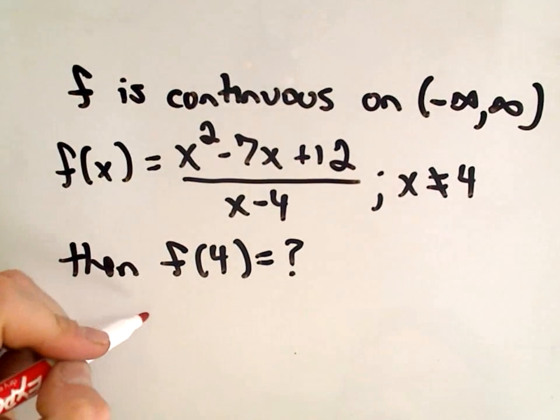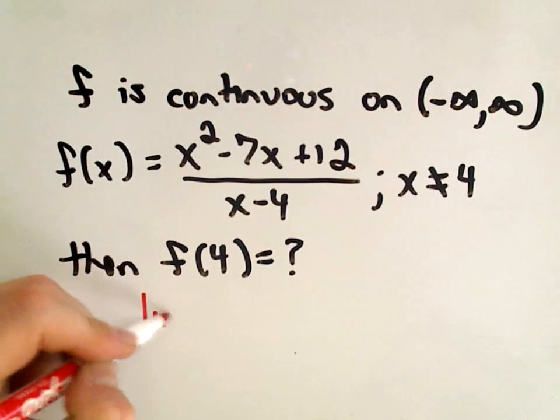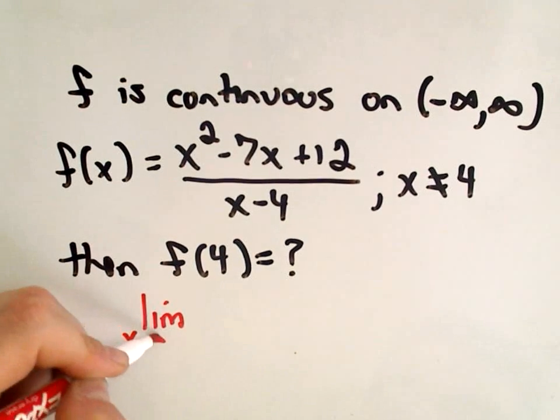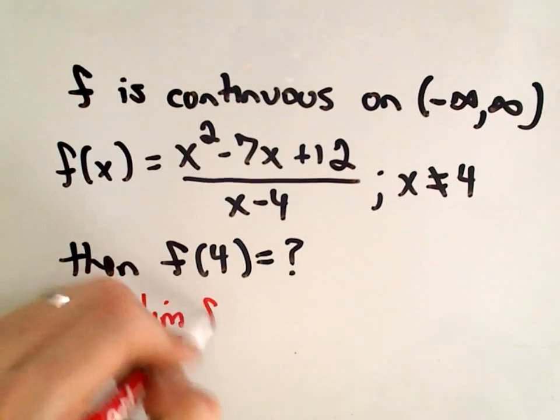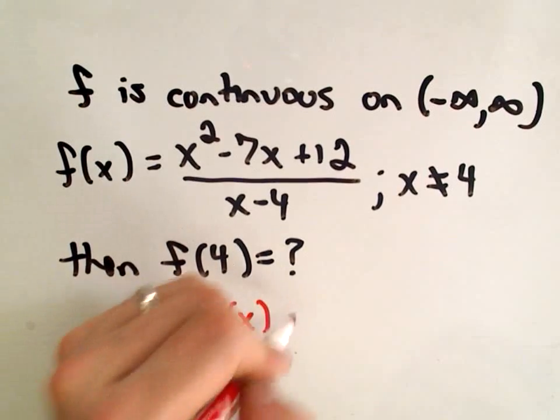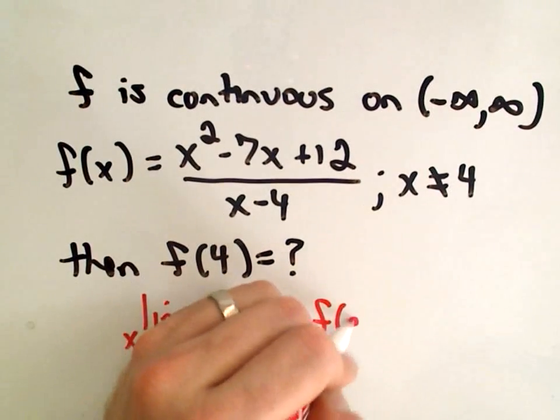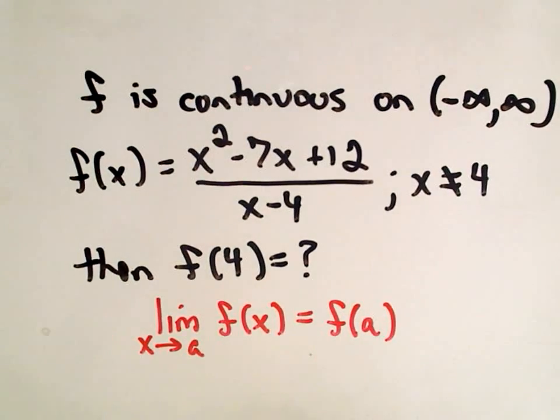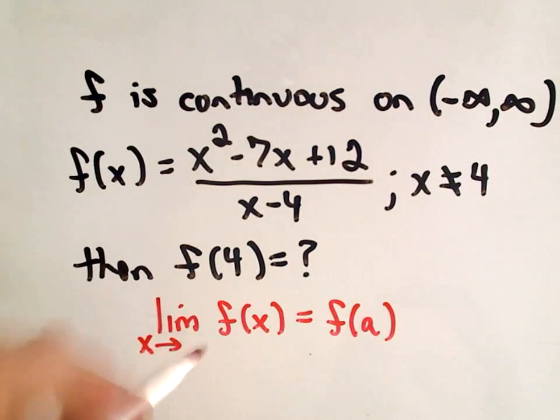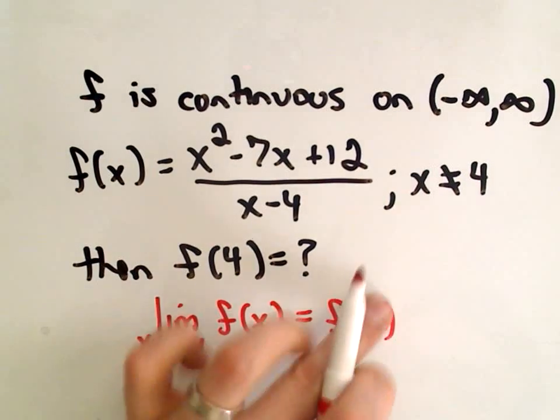So remember the definition of continuity. If f is continuous at a point A, it fulfills the definition: the limit as x approaches A of f(x) equals f(A). Okay, so that's what it means to be continuous at a point A. But since the function's continuous everywhere, in particular it's continuous at the value of A equals 4.